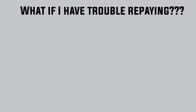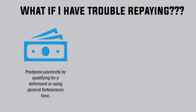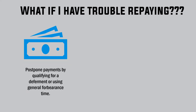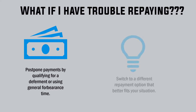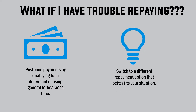What if I have trouble repaying? Well, there are a couple different options. You can postpone payments by qualifying for a deferment or using general forbearance time. Or you can switch to a different repayment option that better fits your situation.